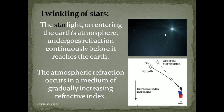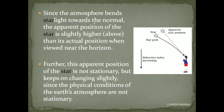Why do stars twinkle? The starlight on entering the Earth's atmosphere undergoes refraction continuously before it reaches the Earth. Atmospheric refraction occurs in a medium of gradually increasing refractive index as the density of air increases as height decreases. Since the atmosphere bends starlight towards the normal, the apparent position of the star is slightly higher than its actual position when viewed near the horizon. This apparent position of the star keeps changing since the physical conditions of the Earth's atmosphere are not stationary.